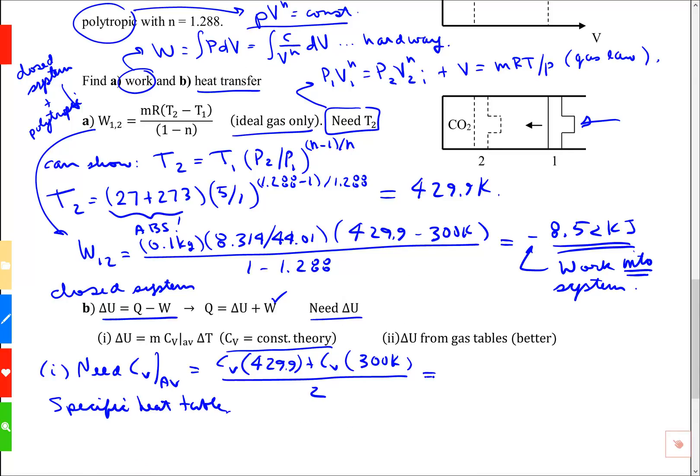Let's go back to the other document. Let's put in some numbers. At 430, I interpolated to get 0.774. At 300, it was 0.657 from that table, divided by 2. The number I get is 0.7155. And again, the units are kilojoules per kilogram per kelvin.